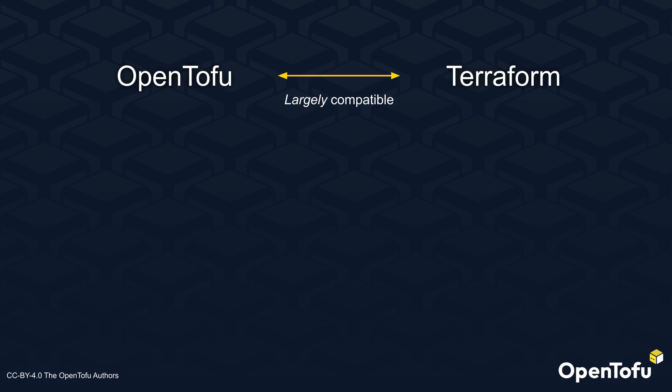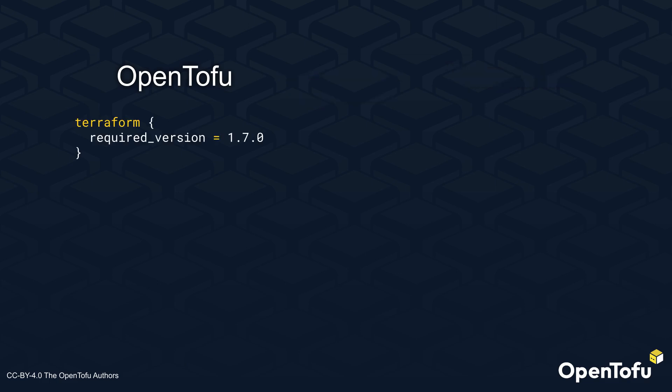However, there are minor differences which may make it difficult to maintain code that is compatible with both tools. The main code compatibility issue between OpenTofu and Terraform is currently versioning. When writing code, you may want to make sure that features you are using are available in the tool. To do this, you can specify the required version parameter in the Terraform block.